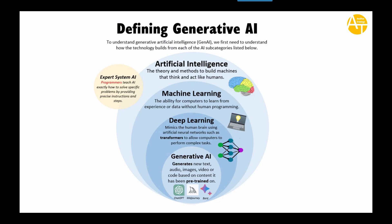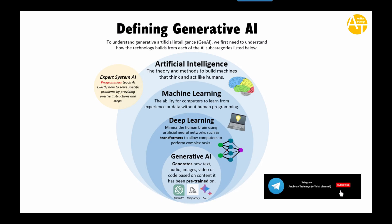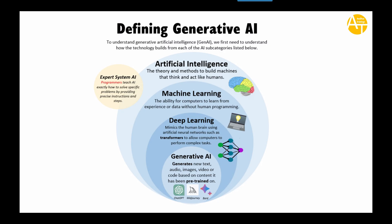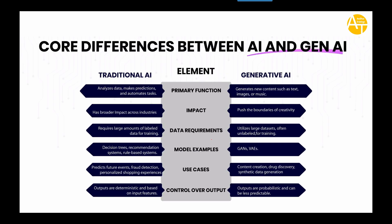Then comes Deep Learning, which mimics the human brain. It is made up of artificial neural networks with billions of parameters, such as transformers, to allow computers to perform complex tasks. This is where the power of Generative AI comes from — Generative AI is actually a combination of AI, ML, and Deep Learning together, which allows it to be creative and generate new text, audio, images, video, or code based on pre-trained content. Examples of Generative AI we use daily include ChatGPT, MidJourney for images, and Google Bard.